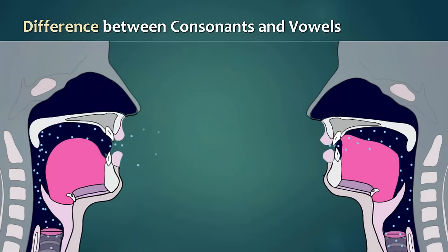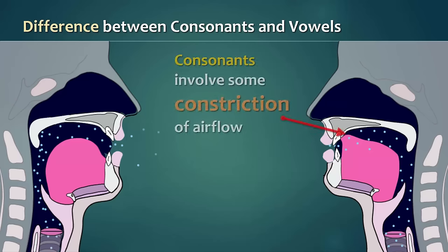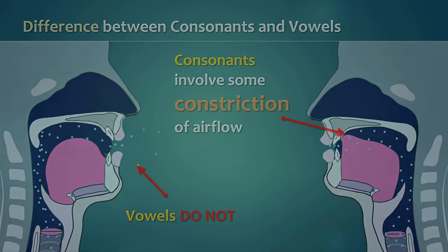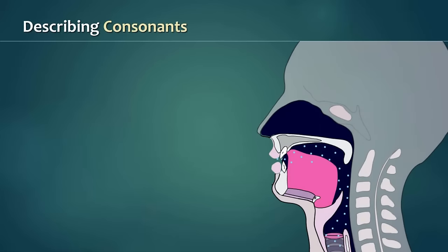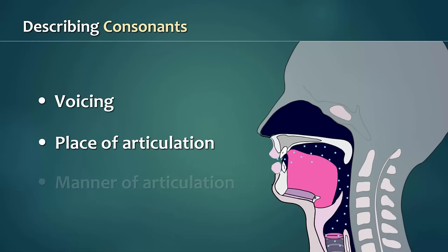What's the difference between consonants and vowels, you might ask? Well, basically, consonants involve some constriction of airflow, whereas vowels do not. When linguists describe consonant sounds, we use three criteria: voicing, place of articulation, and manner of articulation.